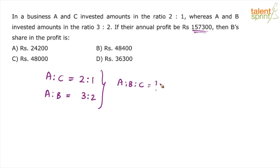How do you do that? Whenever two different ratios are given to you, look at the common term there. What do we have common? A is common in both the ratios. Now, try to make those two values equal. Here we have A as two parts, C is one part. Here we have A as three parts and B is two parts.